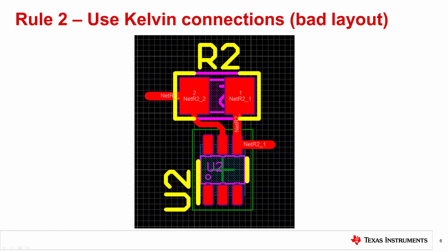Here is an example of a bad layout. Note that the shunt resistor is still close to the amplifier. Again, the high current path goes from left to right through the resistor. There is a Kelvin connection from the left side of the resistor to the amplifier, but the other pad is simply tied into the high current path.